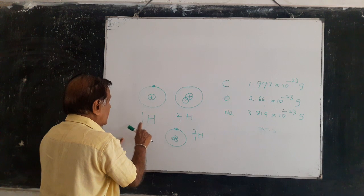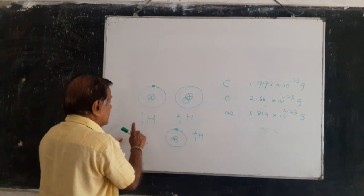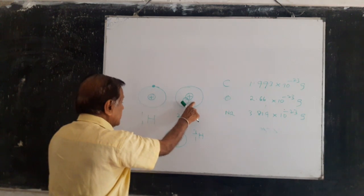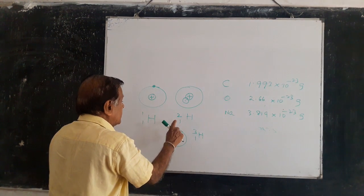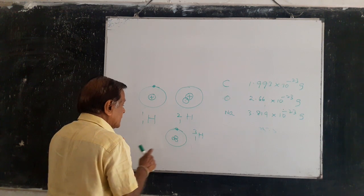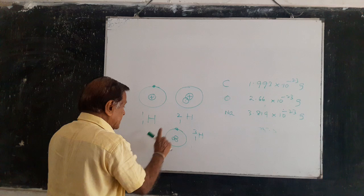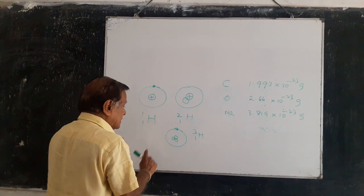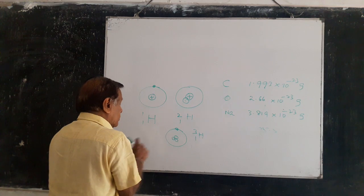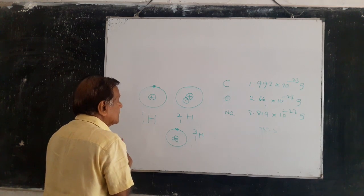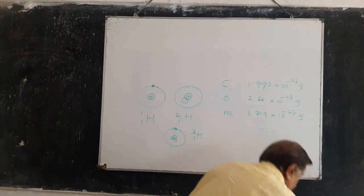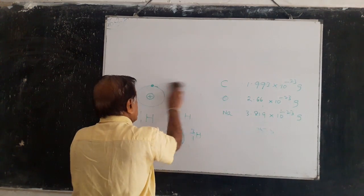In protium, you have one proton and one electron. In ¹H₃ — tritium, the third isotope — you have one proton, two neutrons, and one electron. So similarly, in all the elements you have isotopes.